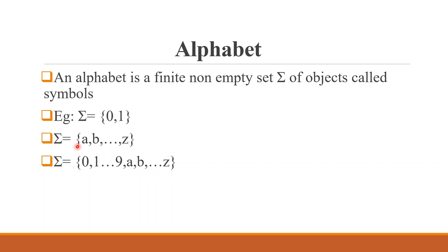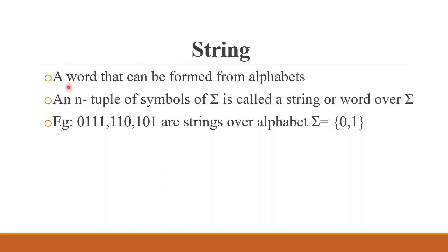Another example: sigma equals {a to z}, or sigma equals {0 to 9, a to z}, combining numbers and letters. Using these alphabets, we generate strings. A string is a word that can be formed from alphabets. Formally, an n-tuple of symbols of sigma is called a string or word over sigma.